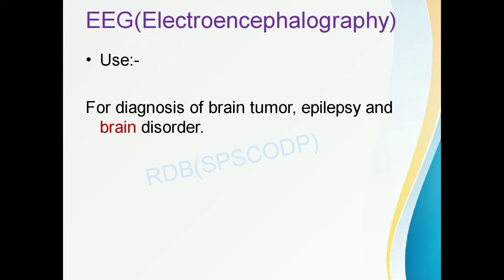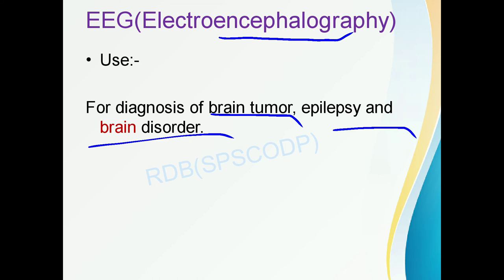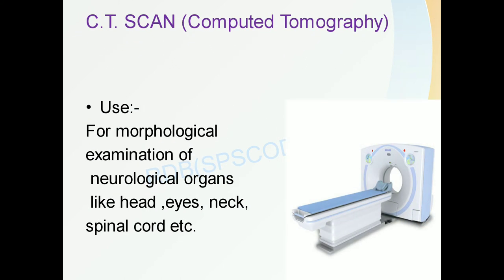Next is EEG — ECG and EEG are two separate equipment. EEG means electroencephalography; encephalo means related to the brain. It is used for diagnosis of brain tumors, epilepsy and brain disorders. Then CT scan, that is Computed Tomography, is used for morphological examination of neurological organs like the head, eyes, neck and spinal cord.